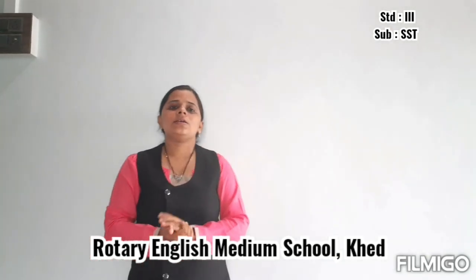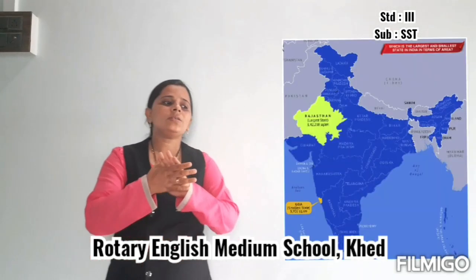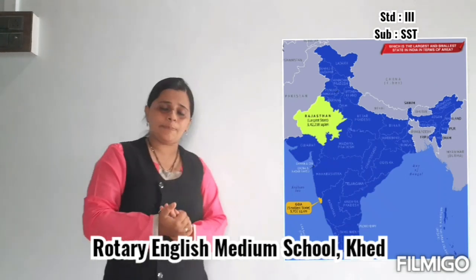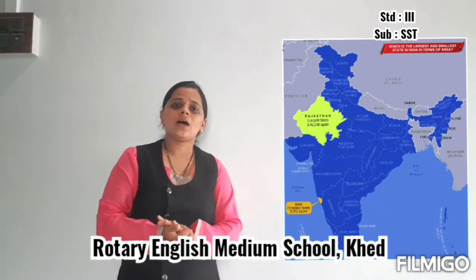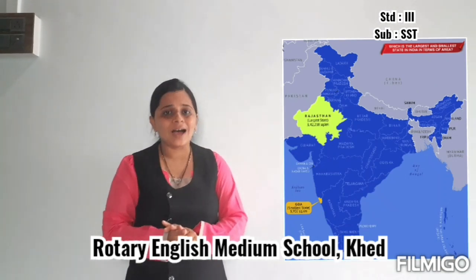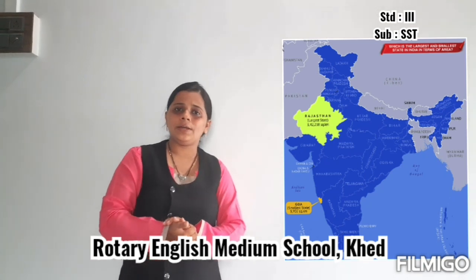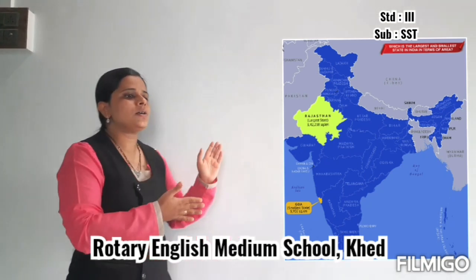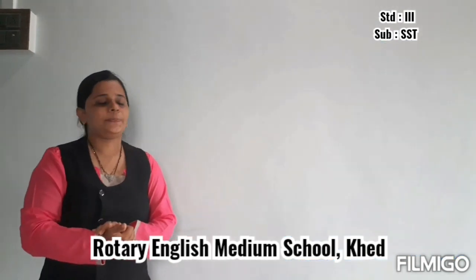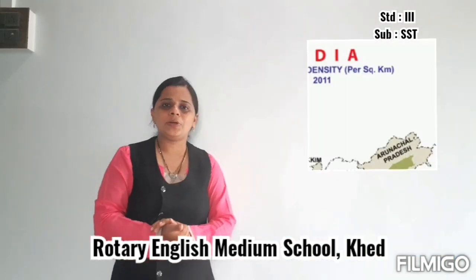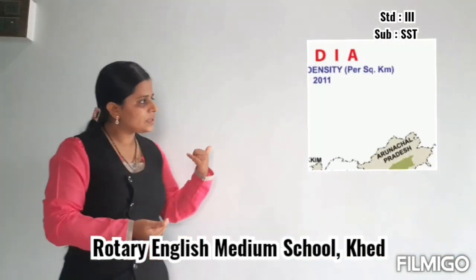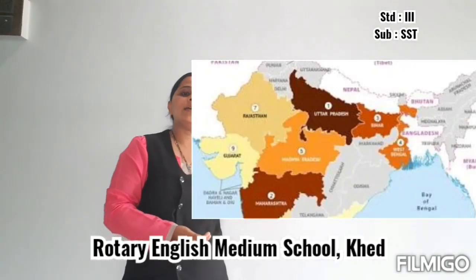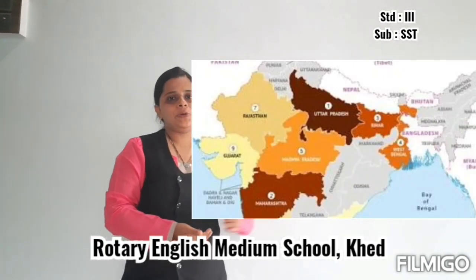Every state has its own capital. Rajasthan is the largest state of India, and Goa is the smallest state by area. Uttar Pradesh has the highest population.